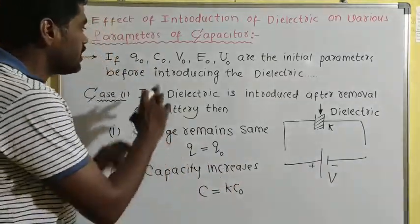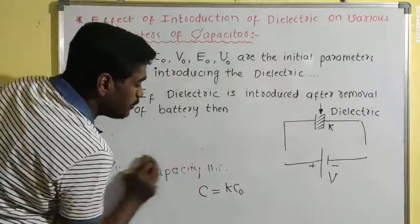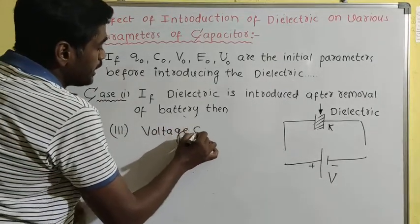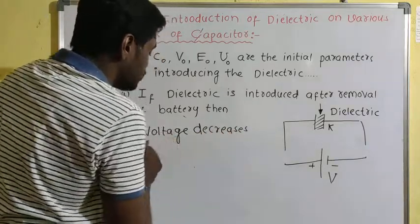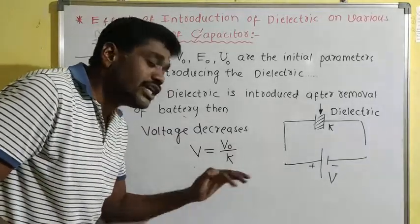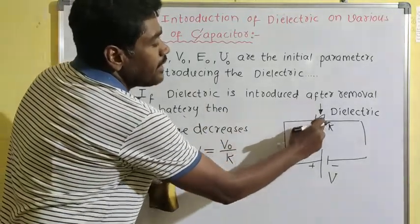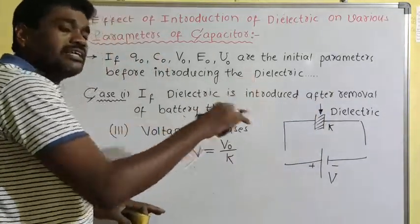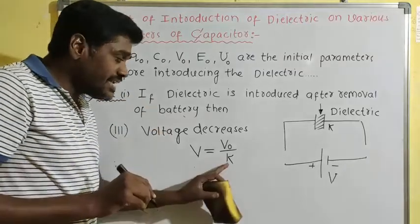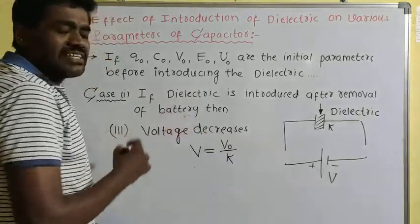The third point: voltage decreases. The new voltage V = V₀/k — voltage decreases by a factor of 1/k. Since k is greater than one and is in the denominator, the voltage decreases: V₀/2, V₀/3, V₀/4, and so on. So voltage decreases.